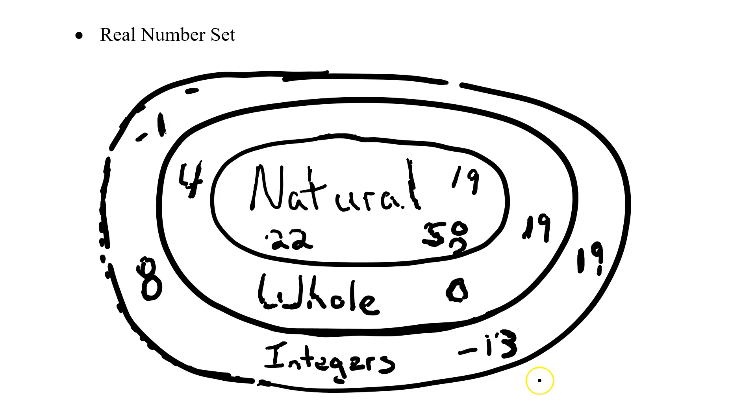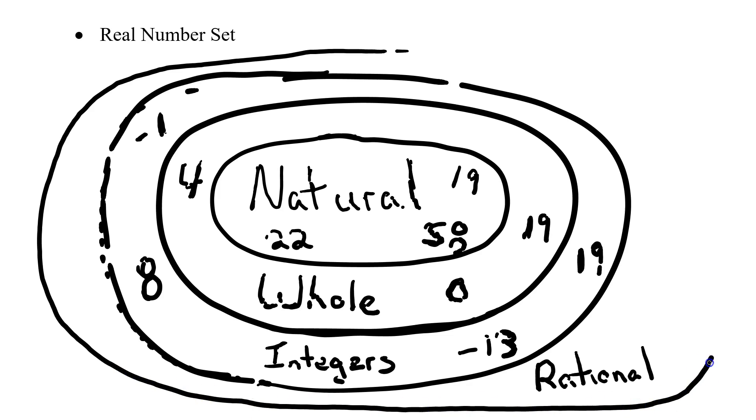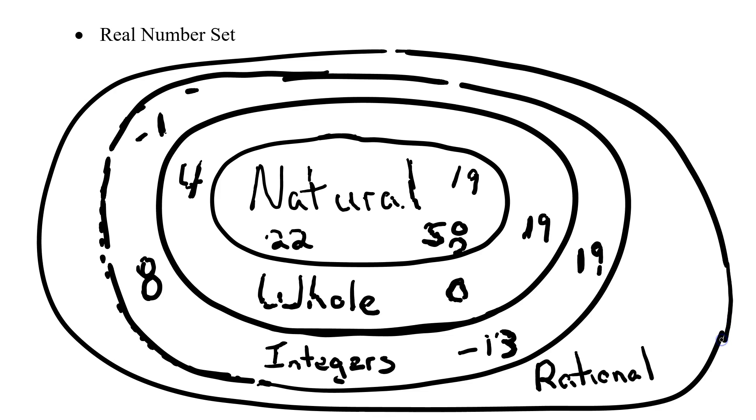And then, finally, we have our rational numbers. And this is our largest circle. Now we can include our fractions and our decimals.